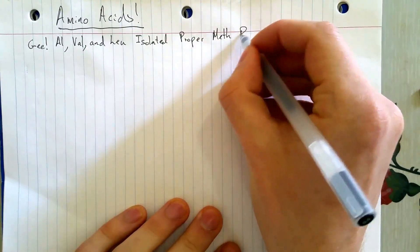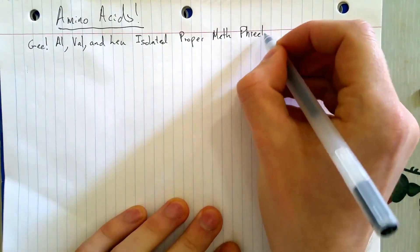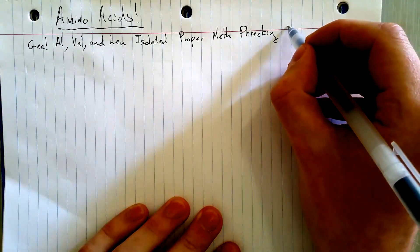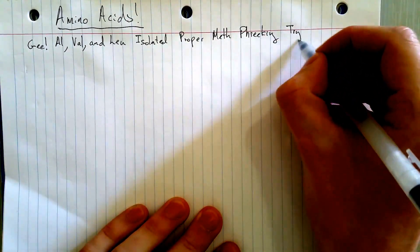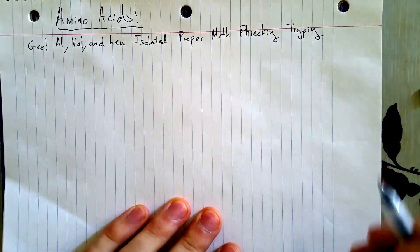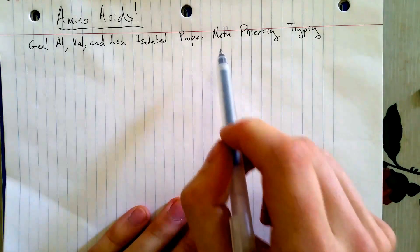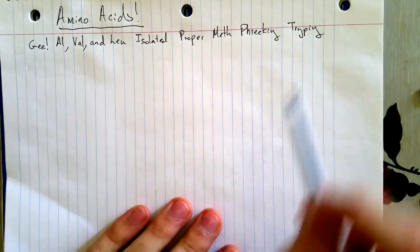And they immediately started to get freaking high, and they were tripping. So G, Al, Val, and Lou isolated some proper methamphetamine, and now they're freaking tripping.